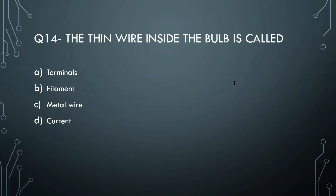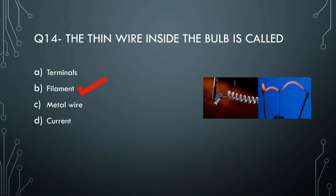Next question: the thin wire inside the bulb is called what? Options are terminal, filament, metal wire, or current. The right answer is filament. The filament is the thin wire inside the bulb - you can see it inside the bulb, and it is what we call the filament.